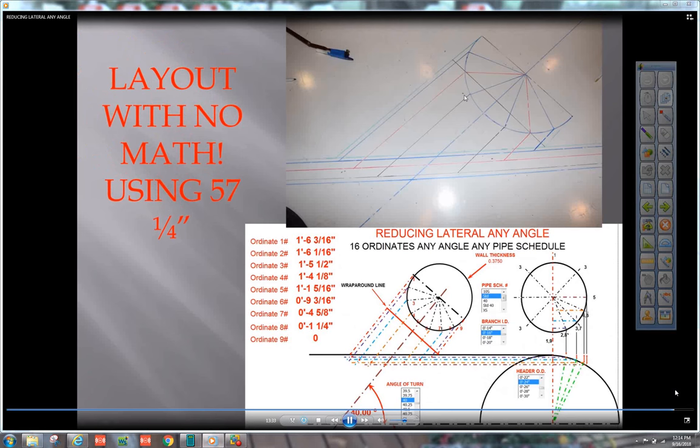Did the layout on the ground on my trash bed sheet. What we did was drew us to scale, layout with no math using 57 and a quarter. 24 inch header, 16 inch branch intersection with the 375 wall at 40 degrees.